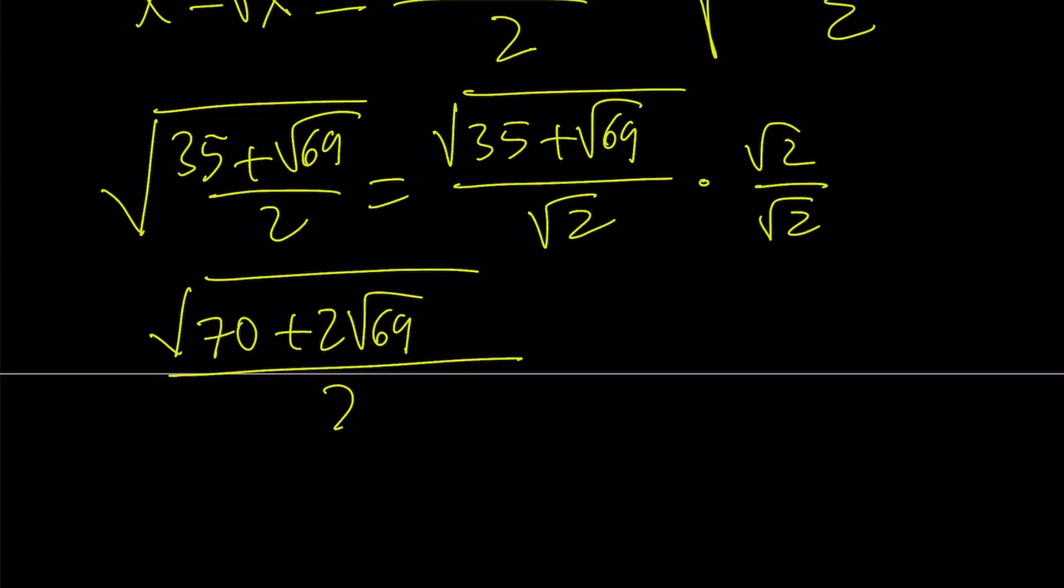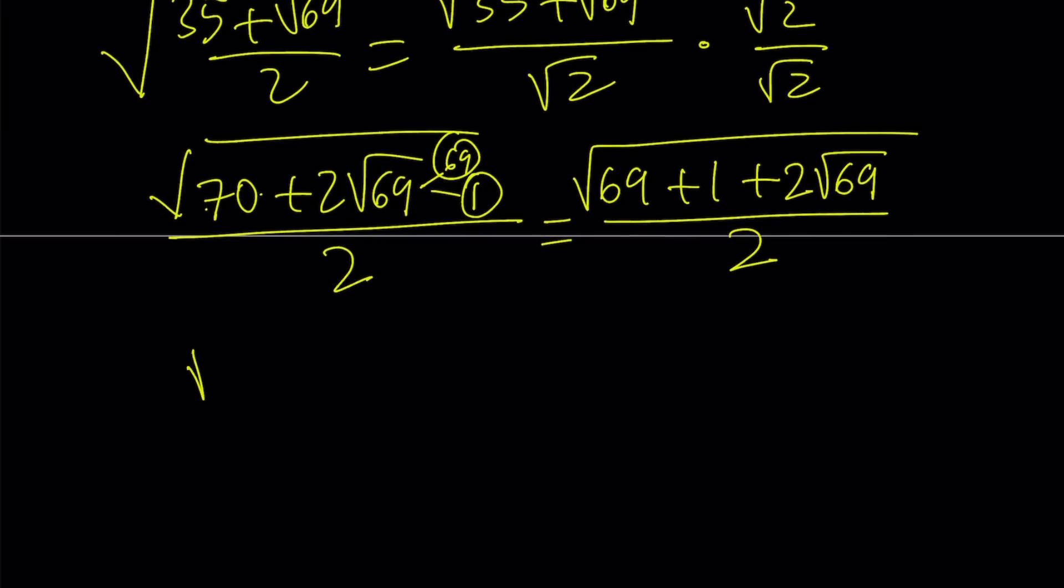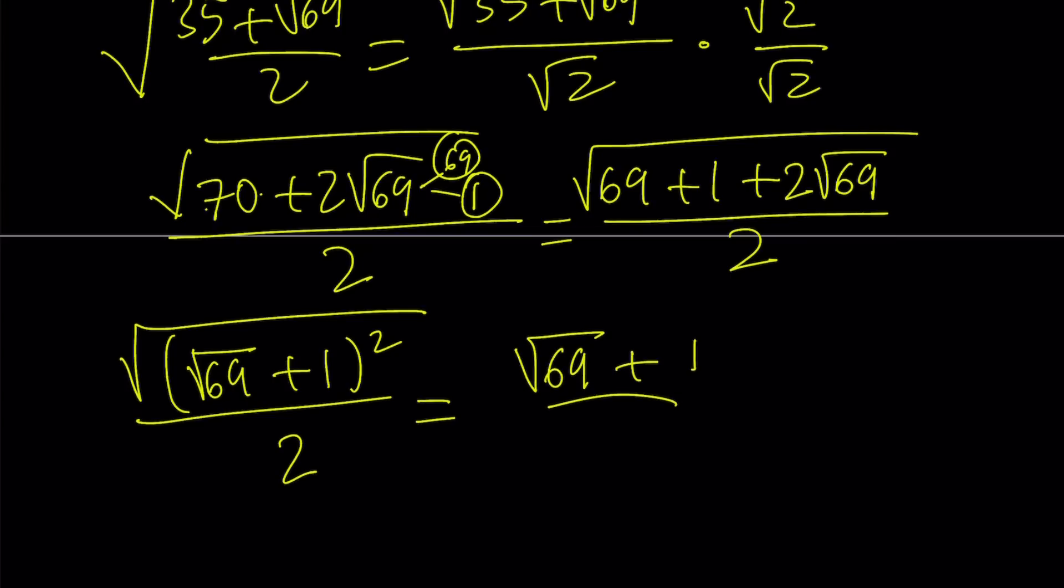If you get an expression like this, this one is easier to denest when there's a 2 inside the radical. Notice that 69 is 69 times 1. And 69 plus 1 is equal to 70. So this can kind of be written as 69 plus 1 plus 2 times the square root of 69, which is 69 times 1. And that just becomes a perfect square. And that is actually the square root of 69 plus 1 squared. But that's a positive expression. So this turns into square root of 69 plus 1 divided by 2.